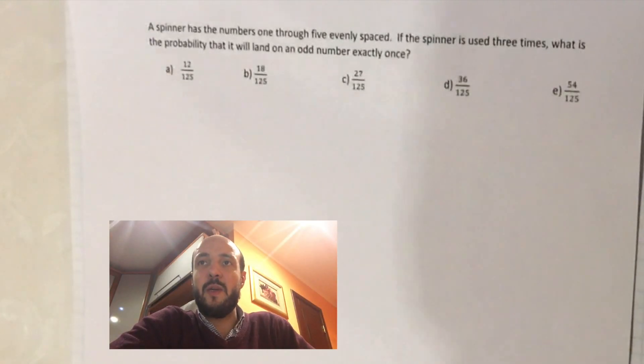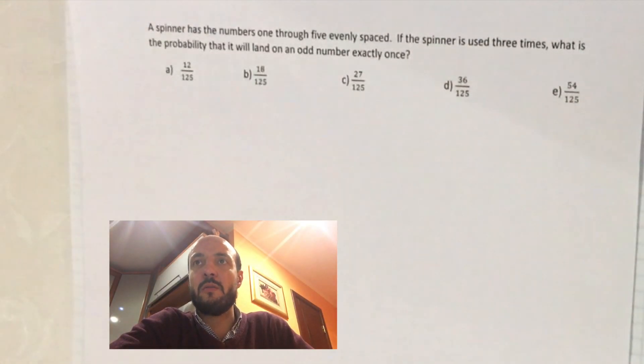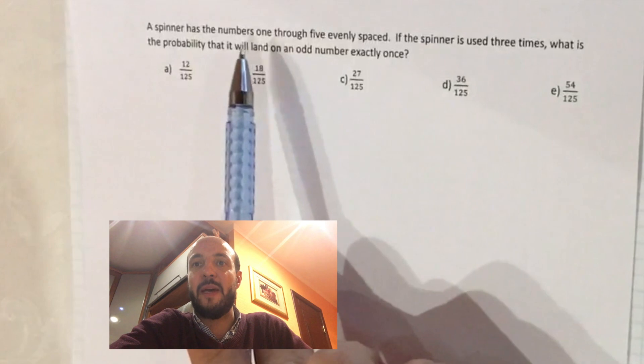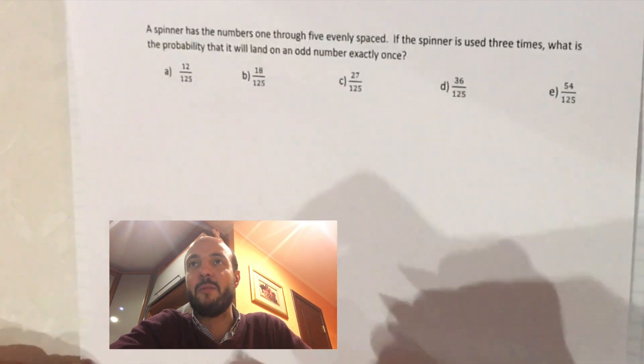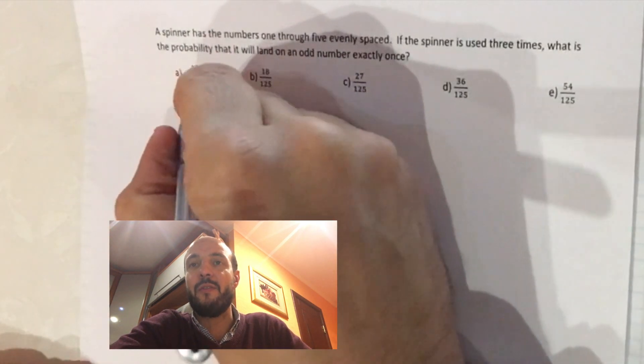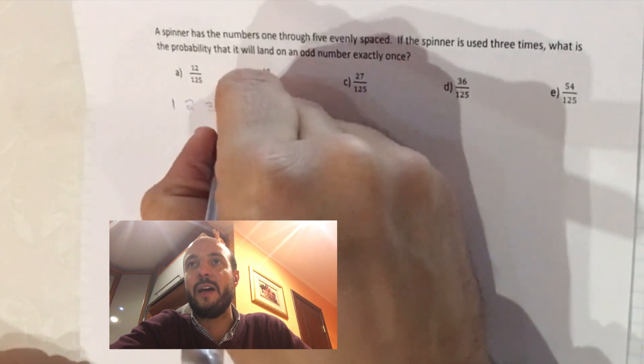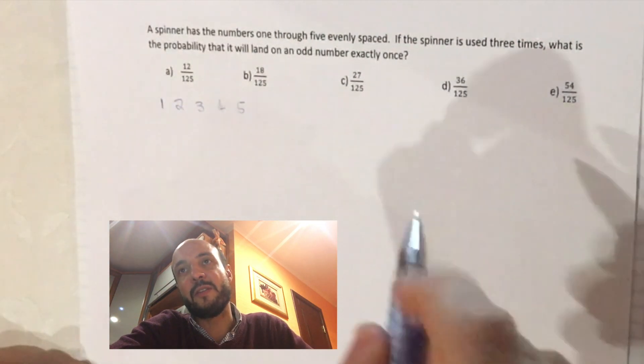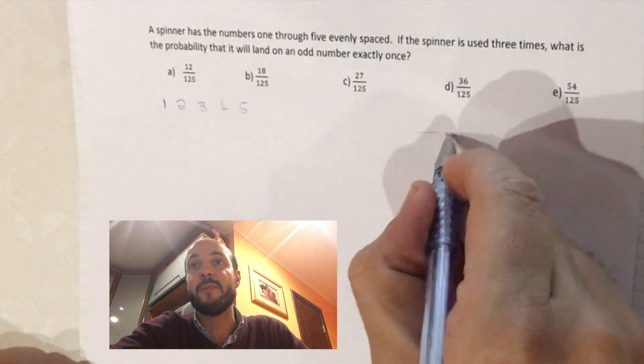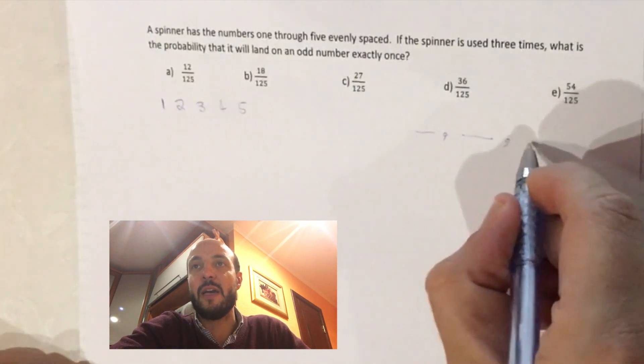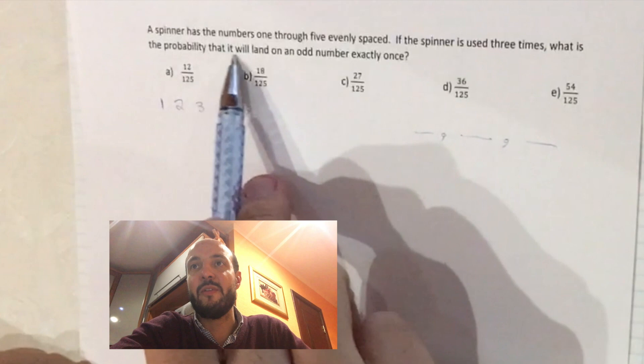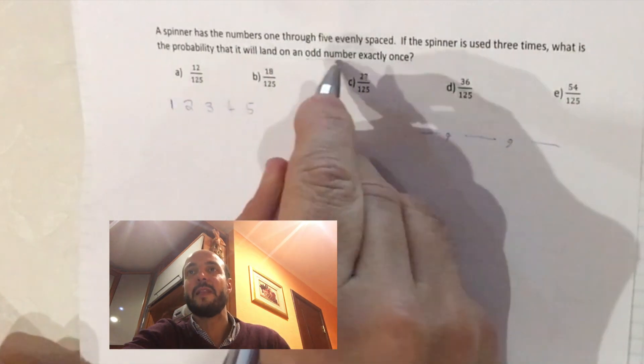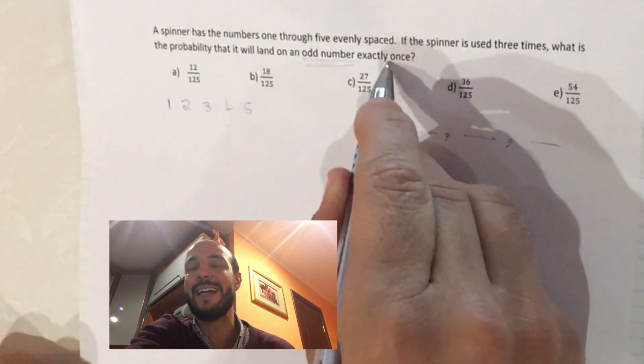Okay, so we have the numbers 1 through 5 evenly spaced. So if we write those out we've got 1, 2, 3, 4, and 5, and we're going to spin our spinner 3 times. So if we mark out those 3 spaces, we're interested in the probability of getting an odd number exactly once.